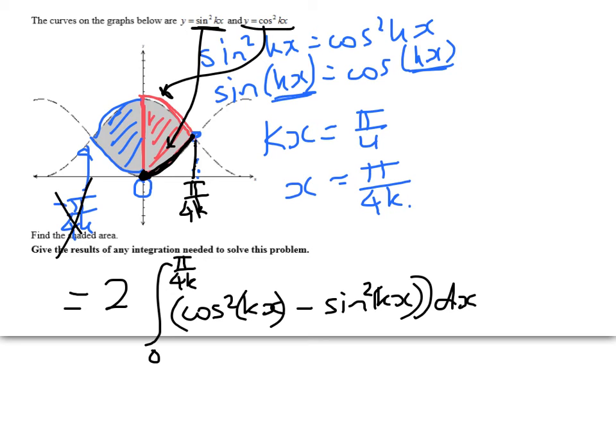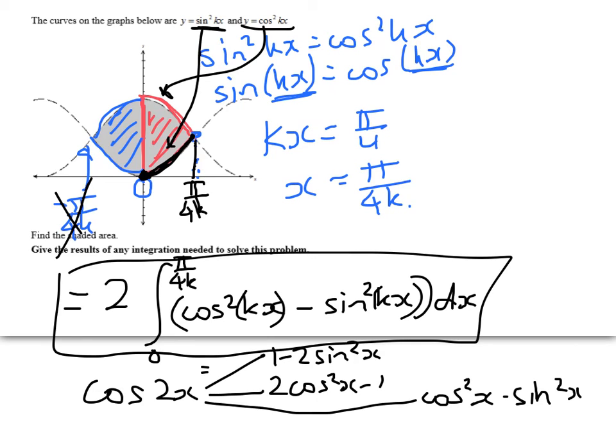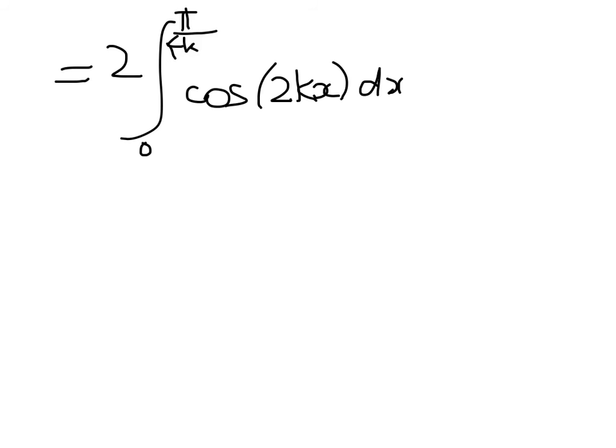Now, if you look at that and you can't remember what to do, remember whenever we see a trig function squared, we think back to our favorite trig identity, cos of 2x. And there are three versions, 1 minus 2 sine squared x, no use, 2 cos squared x minus 1, and the last one, which happily is going to help, which is cos squared of x minus sine squared of x. So that's what we're going to use here. So this equals 2 times the integral of pi on 4k to zero of cos of 2kx dx. So we've done some pretty nice simplifying to get to that point.